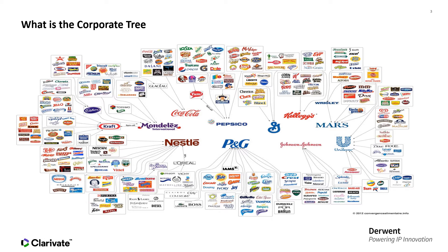Because it relies, in part, on data about corporate mergers and acquisitions, it focuses on jurisdictions where we can get good M&A data. So it covers U.S. grants, PCT patent applications, sometimes called WO documents, and European patent applications and grants.